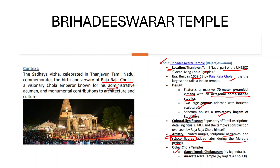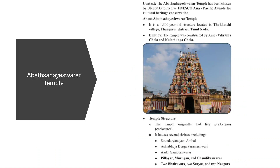The stucco figures in the Brihadeeswara Temple were added later during the Maratha period, and painted murals and sculptural narratives can also be seen there. Other famous Chola temples include Gangaikonda Cholapuram built by Rajendra Chola I, and the Airavatesvara Temple built by Raja Raja Chola II. The Airavatesvara Temple has been chosen by UNESCO to receive the UNESCO Asia-Pacific Award for Cultural Heritage Conservation. It is a 1,300-year-old structure in Thanjavur district of Tamil Nadu, built by Vikrama Chola and Kulottunga Chola, and has five prakarams.